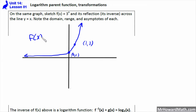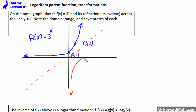We'll make f(x) = 3^x in blue. Then it says graph its reflection across the line y equals x. The line y equals x goes through here like this. The reflection across y equals x would give us the red graph. This point would be (1, 0), and then this point out here would be (3, 1).